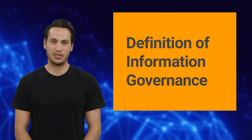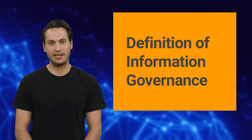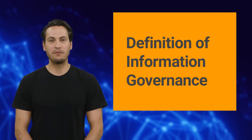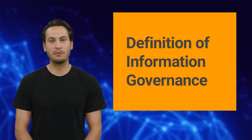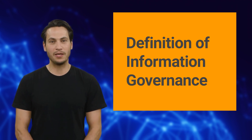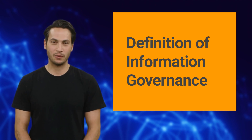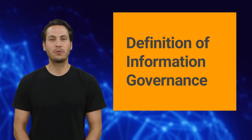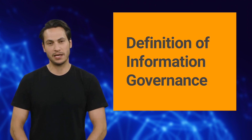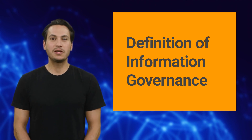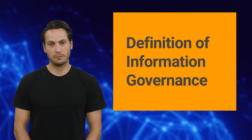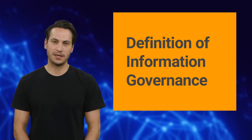Information governance is a strategic approach to managing an organization's information assets throughout their lifecycle. It involves establishing policies, procedures, and guidelines to ensure data integrity, availability, and security while complying with relevant legal and regulatory requirements. By implementing information governance, organizations can effectively control and govern their data to make informed decisions and mitigate risks.